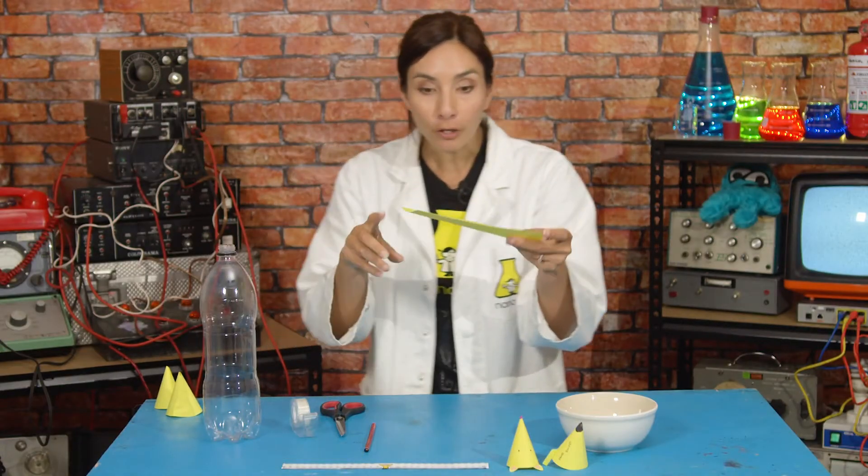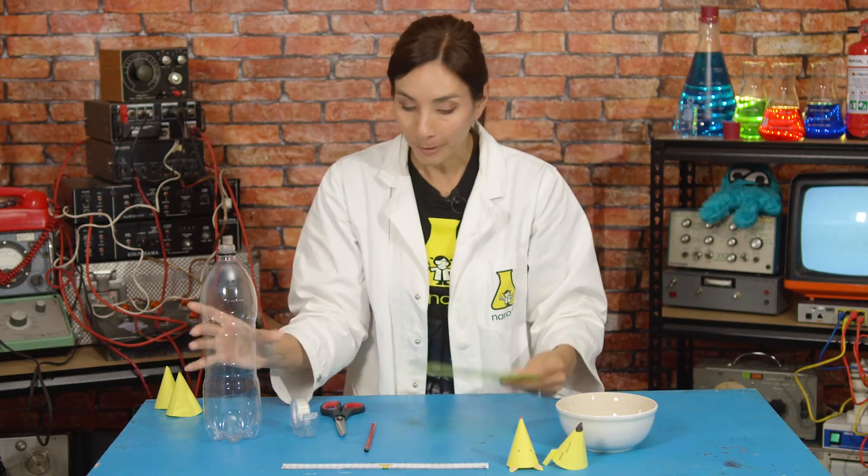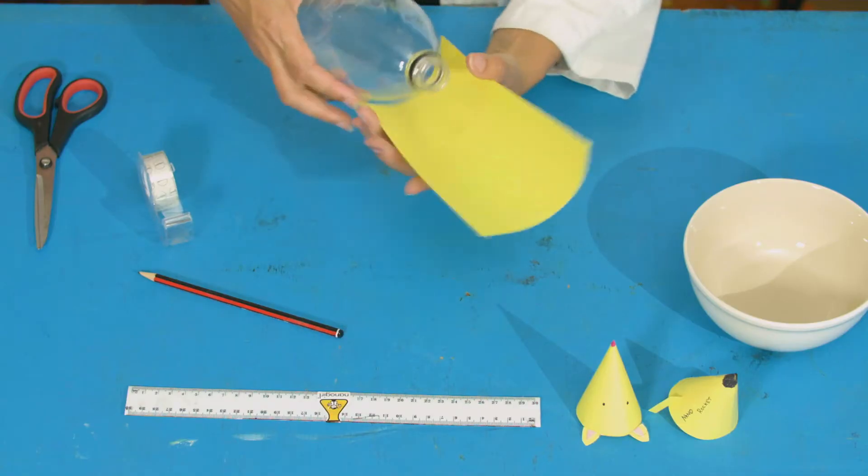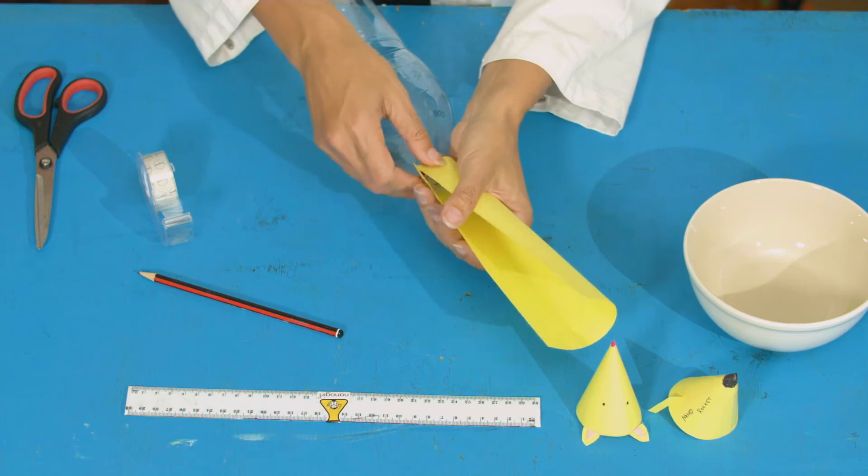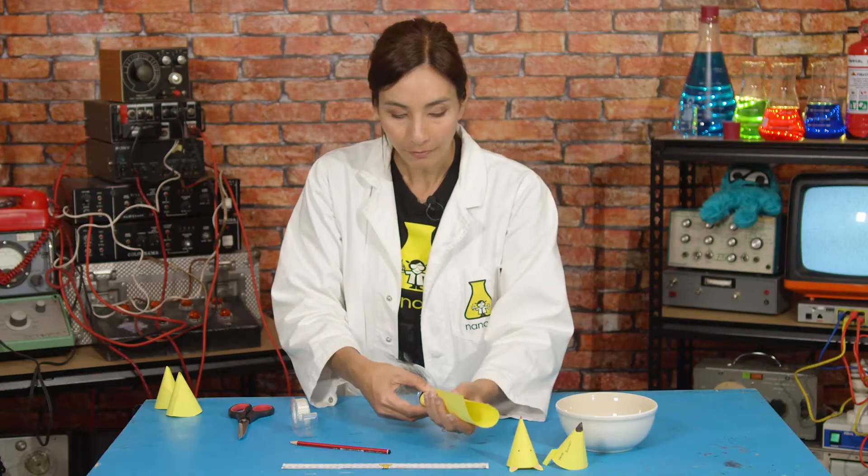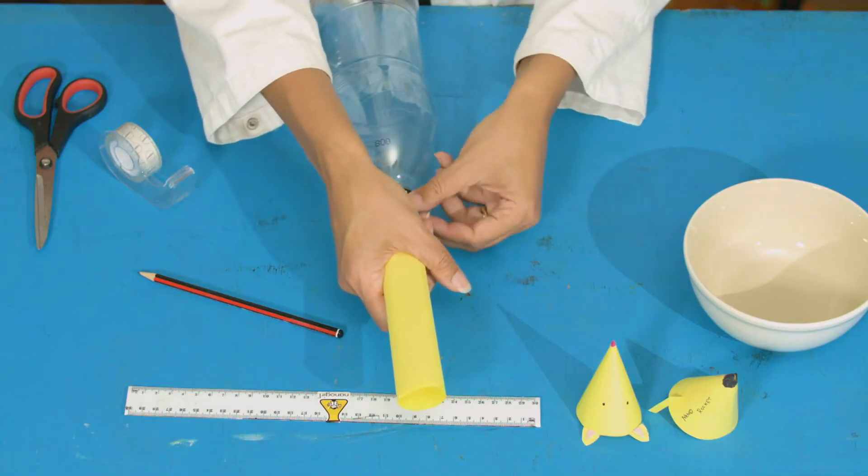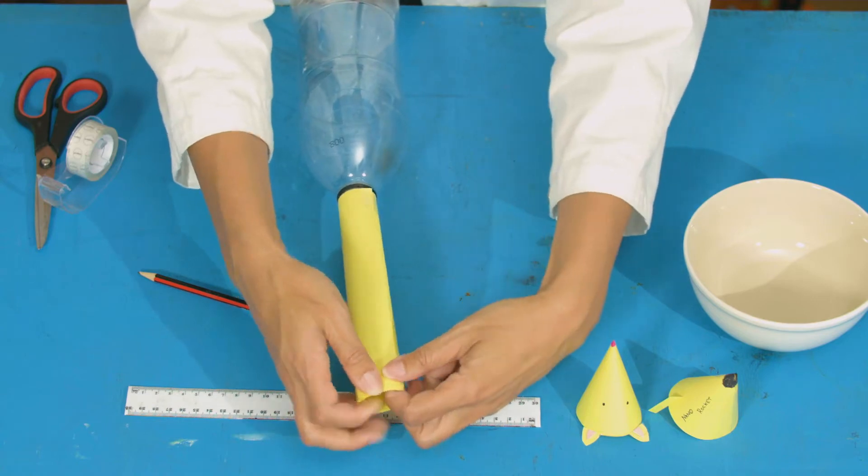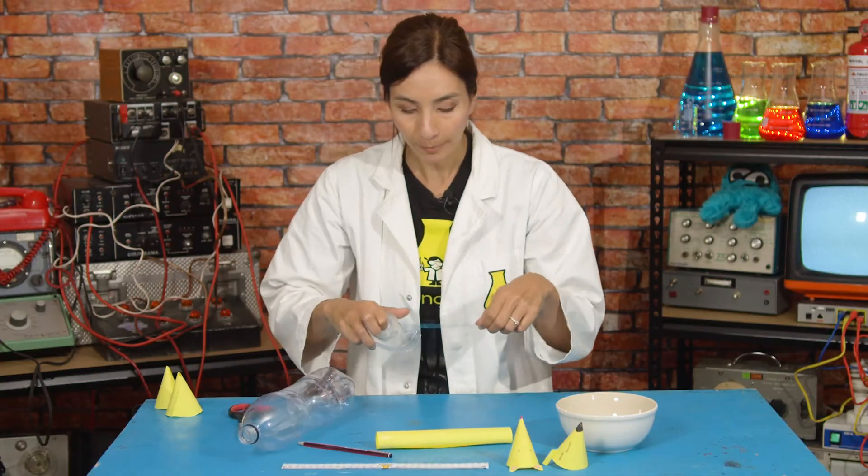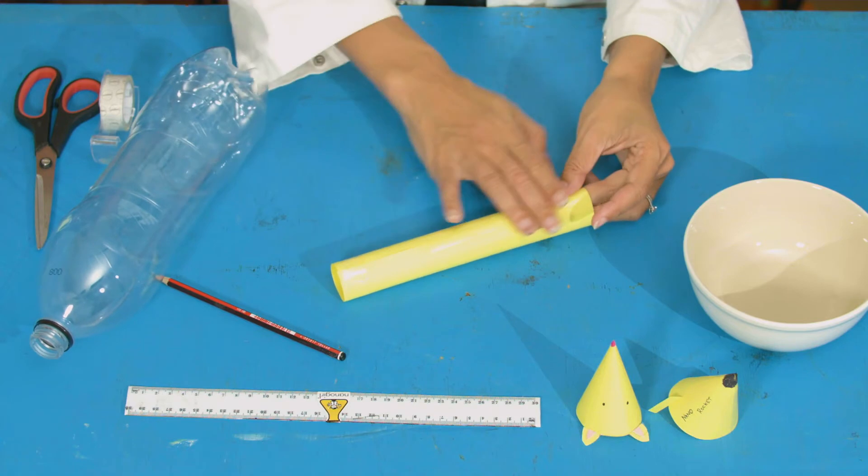Next you're going to take your leftover bit of rectangle of paper and roll it around the opening on your bottle to make a straw. When it's the right size, tape it. You want to seal this whole tube with tape to make sure that no air can get in through the side of the tube.